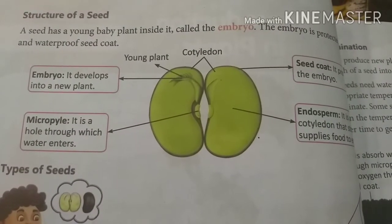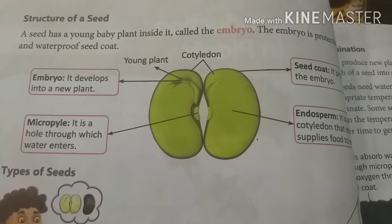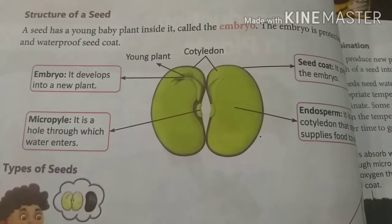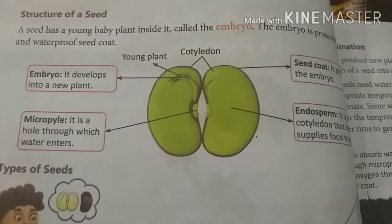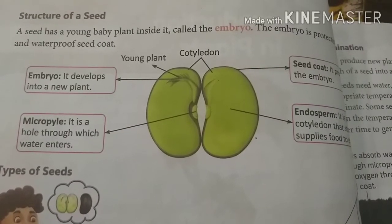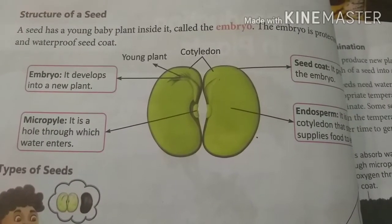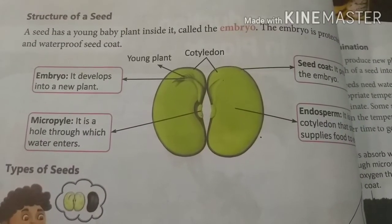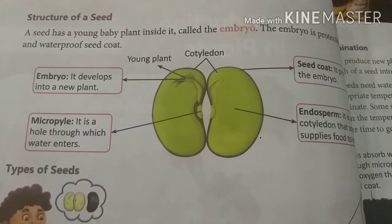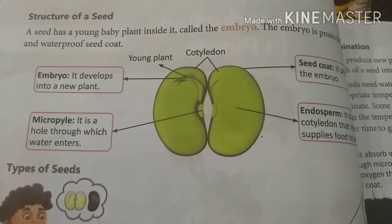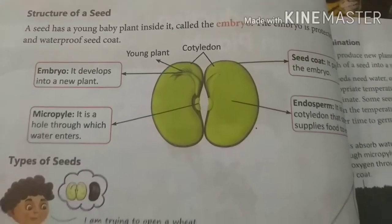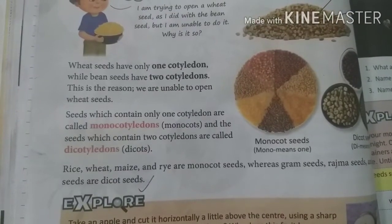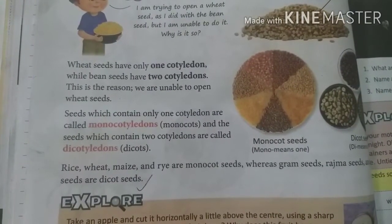Today I opened a wheat seed and it could not be converted into two parts. I also took a rice seed — it also did not divide into two parts. Why? Because these seeds have only one part. Seeds that have only one part are called monocotyledons, while seeds that have two parts or two cotyledons are called dicots or dicotyledons.